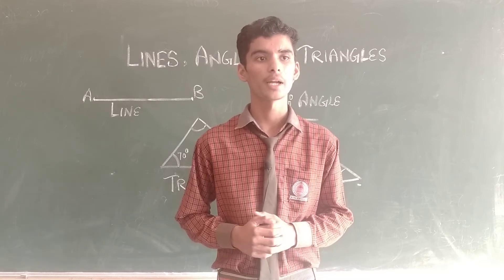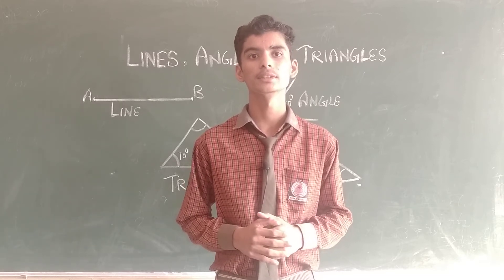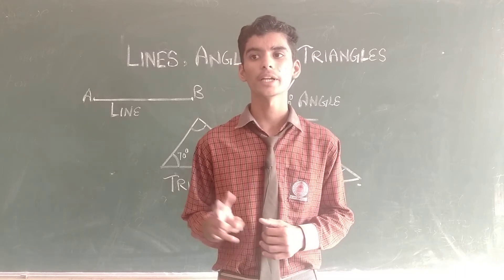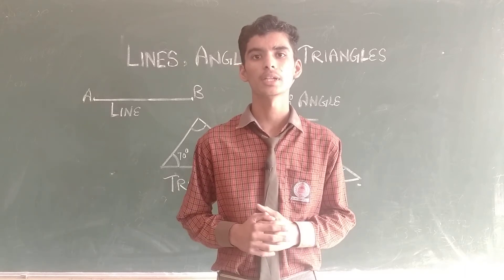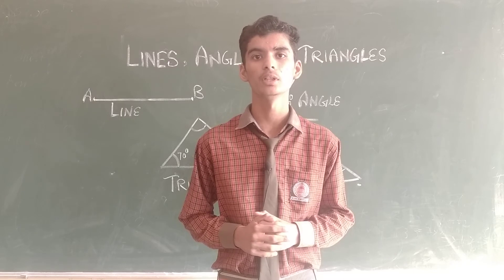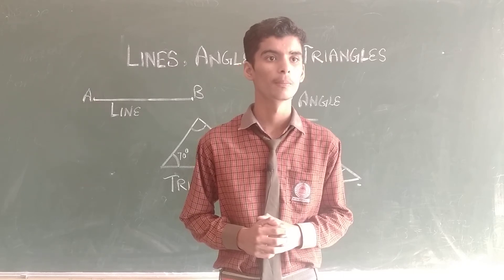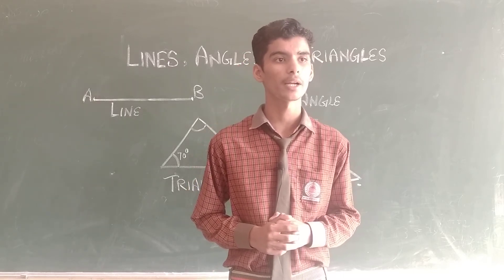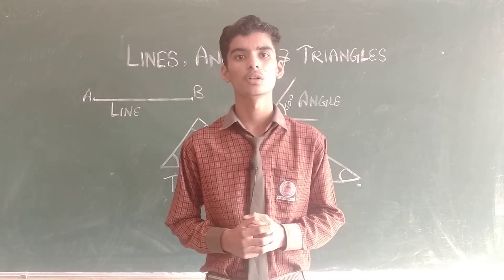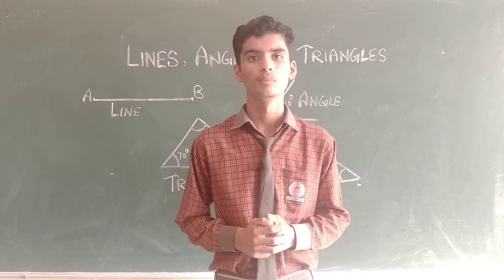The first one is scalene triangle — a triangle in which no sides are equal is called a scalene triangle. The second one is isosceles triangle — a triangle in which two sides are equal is called an isosceles triangle. The third one is equilateral triangle — a triangle in which all sides are equal is called an equilateral triangle.